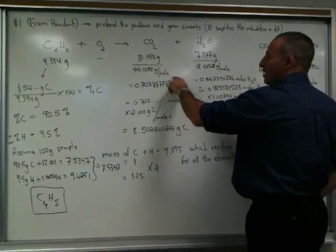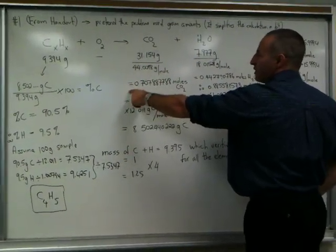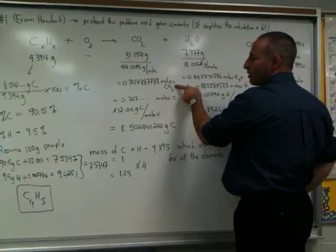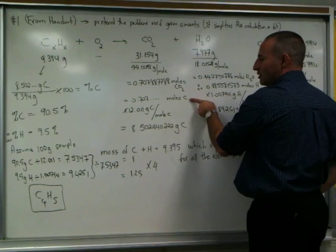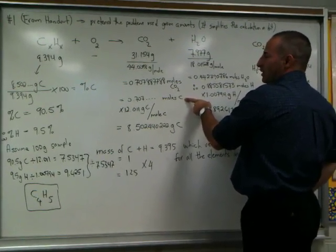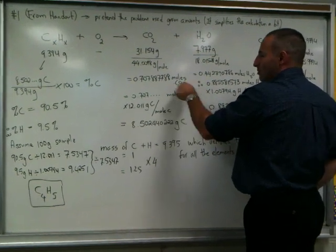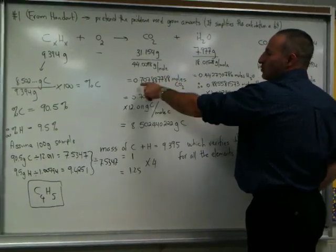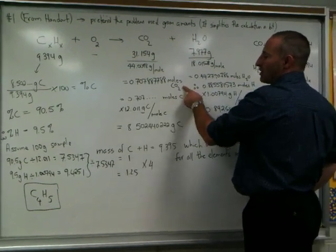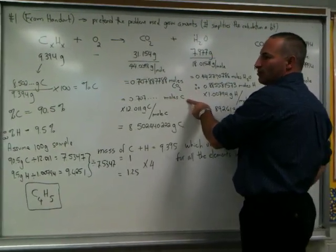If you know how many moles of carbon dioxide is produced by a reaction you also know how many moles of carbon because each mole of carbon dioxide contains in it one mole of carbon. Just like one person has one head. So this is the person, there's the head. So if you know you have 0.707 moles of carbon dioxide molecules you'll have the same number of moles of carbon.